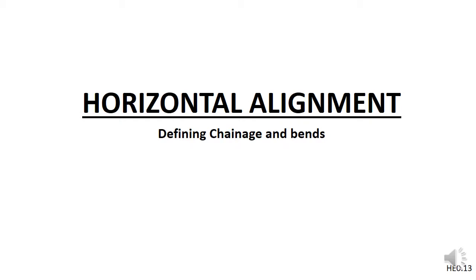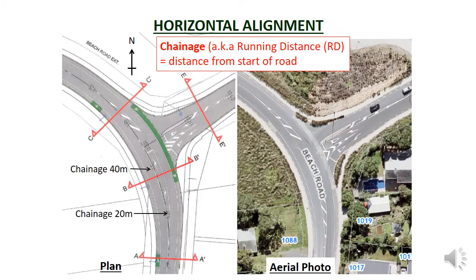In this video we will look at the horizontal alignment and plans in more detail. The horizontal alignment is the shape of the road when viewed from above, sort of like a map, although engineering drawings have more information. The view from above is called the plan view, or plan for short. Construction drawings usually have a number of plans showing all or parts of the road from above.